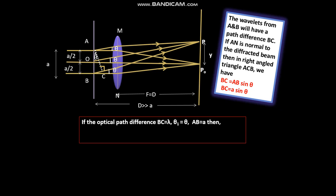If the optical path difference BC is lambda, theta_1 is theta, AB is equal to A, then what we have is lambda is equal to A sine theta. Such a point P is the position of the first secondary minima.